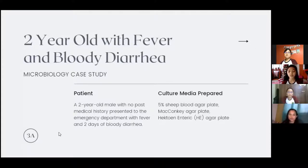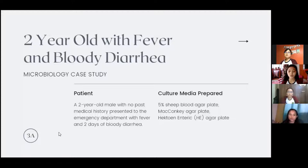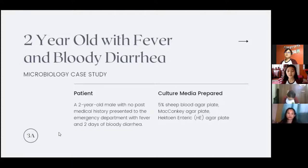The bile salt and crystal violet inhibit the growth of gram-positive organisms. Lactose fermenters appear red in color, while non-lactose fermenters are clear. The Hektoen enteric agar plate is a selective media containing lactose, sucrose, sodium thiosulfate, ferric ammonium citrate, and bromothymol blue indicator. Carbohydrate fermenters appear as yellow-orange colonies, and non-fermenters appear green or blue in color.